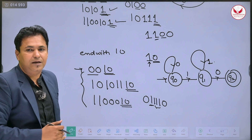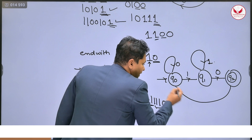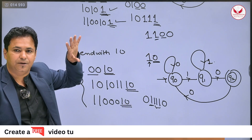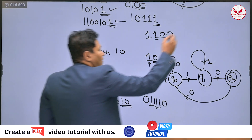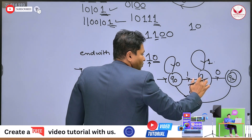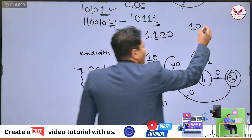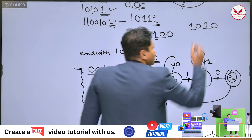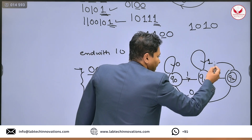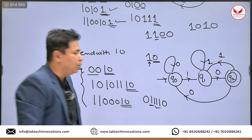What about if the string has a 0 after reaching q2? The string should not enter into the final state. So in q2 state, by processing 0, it will return back to q0 state. What about 1? By processing 1, it will reach to q1 state, and by processing 0 again it will reach to q2 state. So in q2 state, by processing 1, it will return back to q1 state.